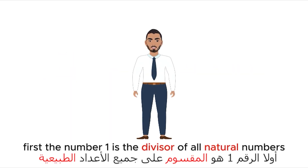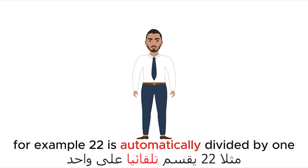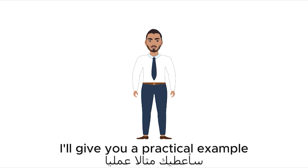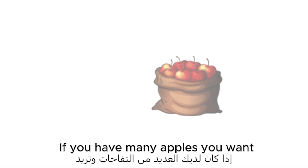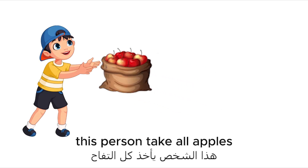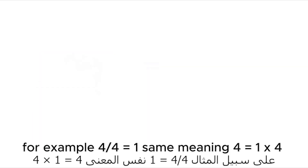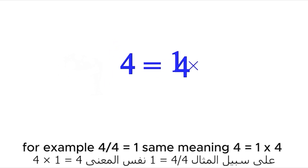Two simple notes. First, the number 1 is a divisor of all natural numbers, which means any natural number — for example 22 — is automatically divisible by 1. Second, every natural number is a divisor of itself. For example, 4 divided by 4 equals 1, which is the same as saying 4 equals 1 times 4.